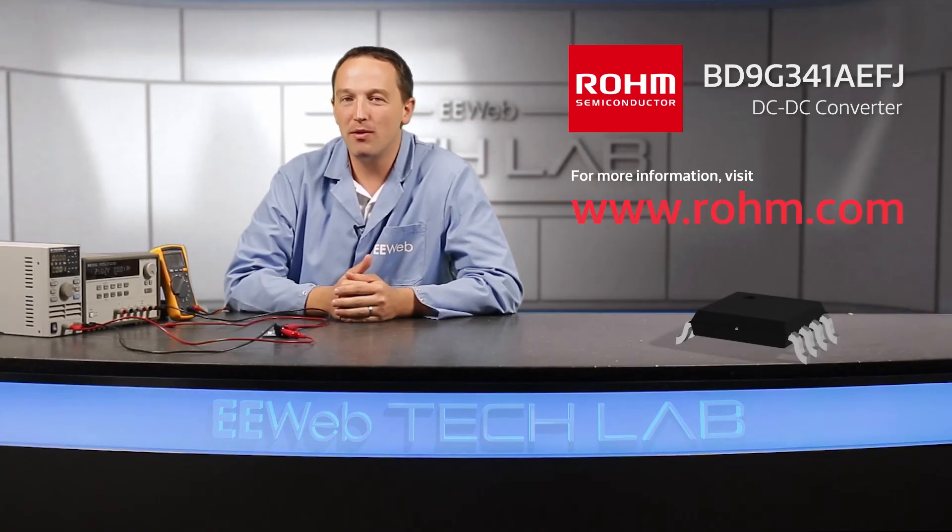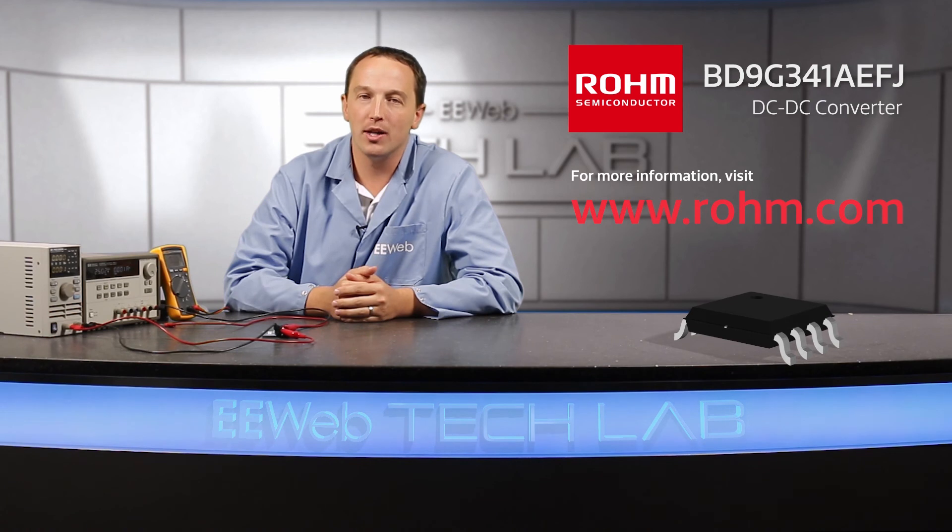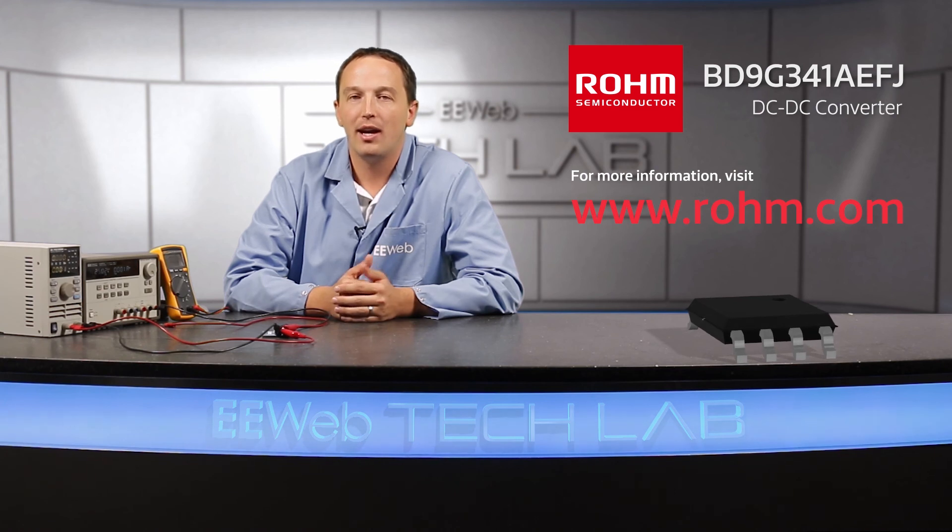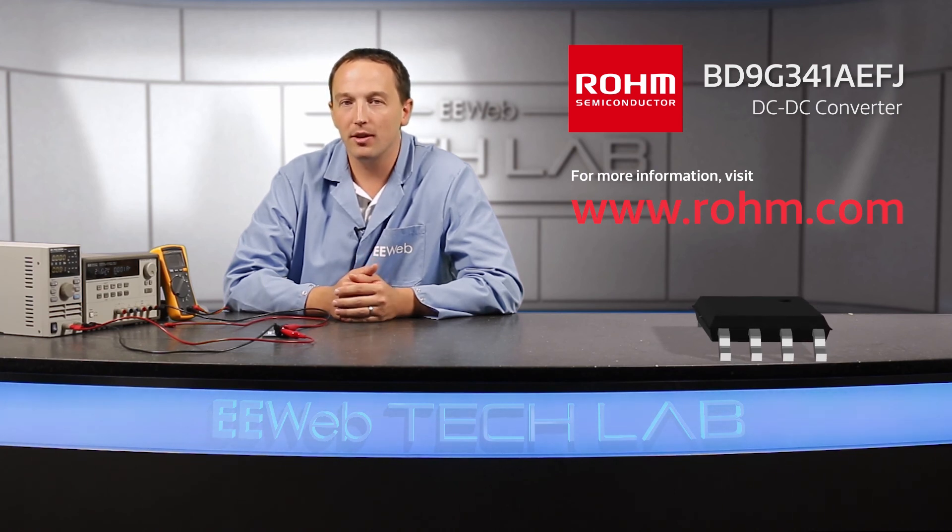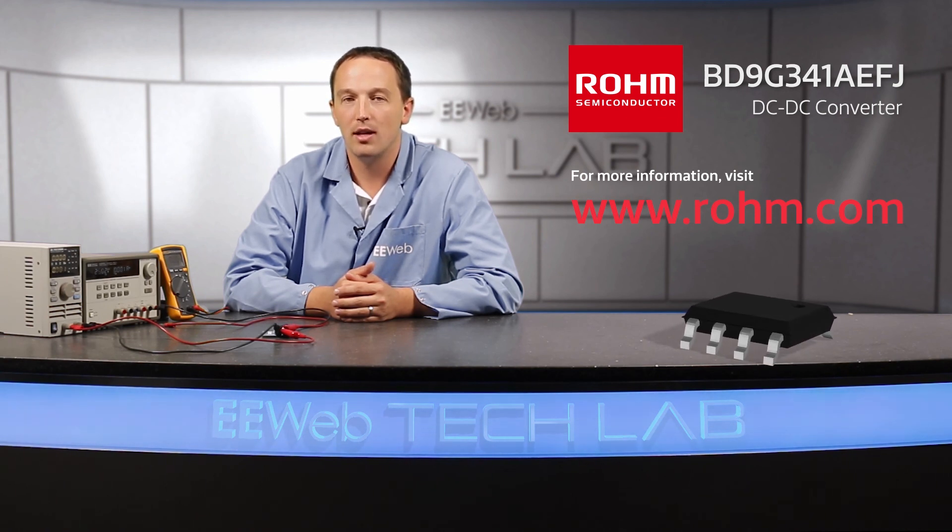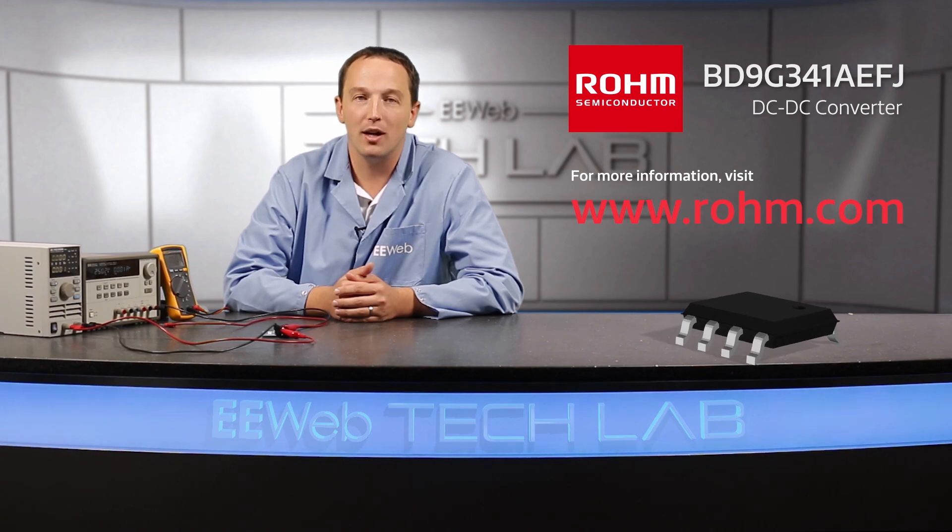ROHM's BD9G341AEFJ accepts a wide 12 to 76 volt input and reduces design effort thanks to its integrated FET and current mode architecture. A switching frequency up to 750 kilohertz allows for smaller inductors and provides high efficiency variable output voltage from 1 volt to VCC with 3 amps of current. For more information visit ROHM.com.